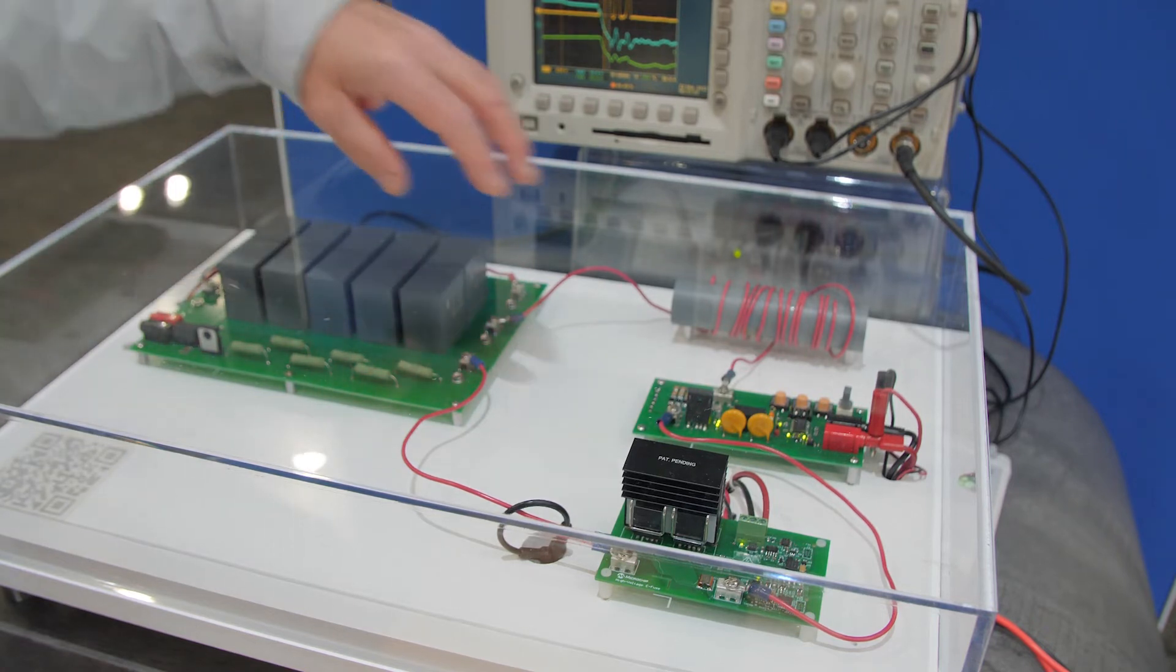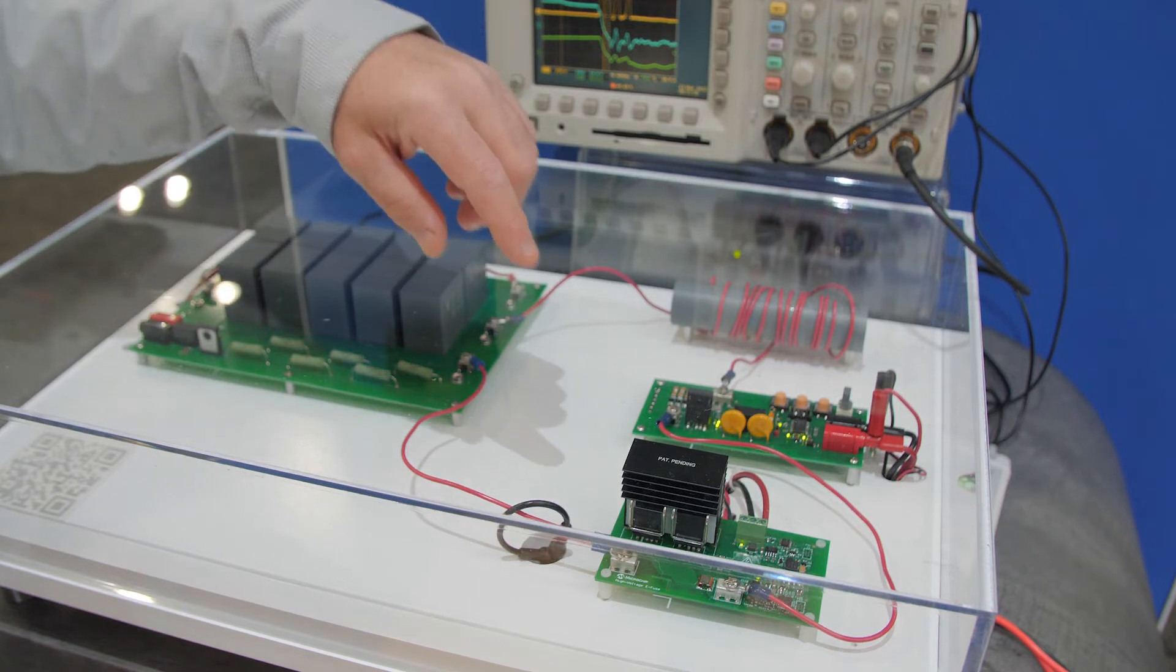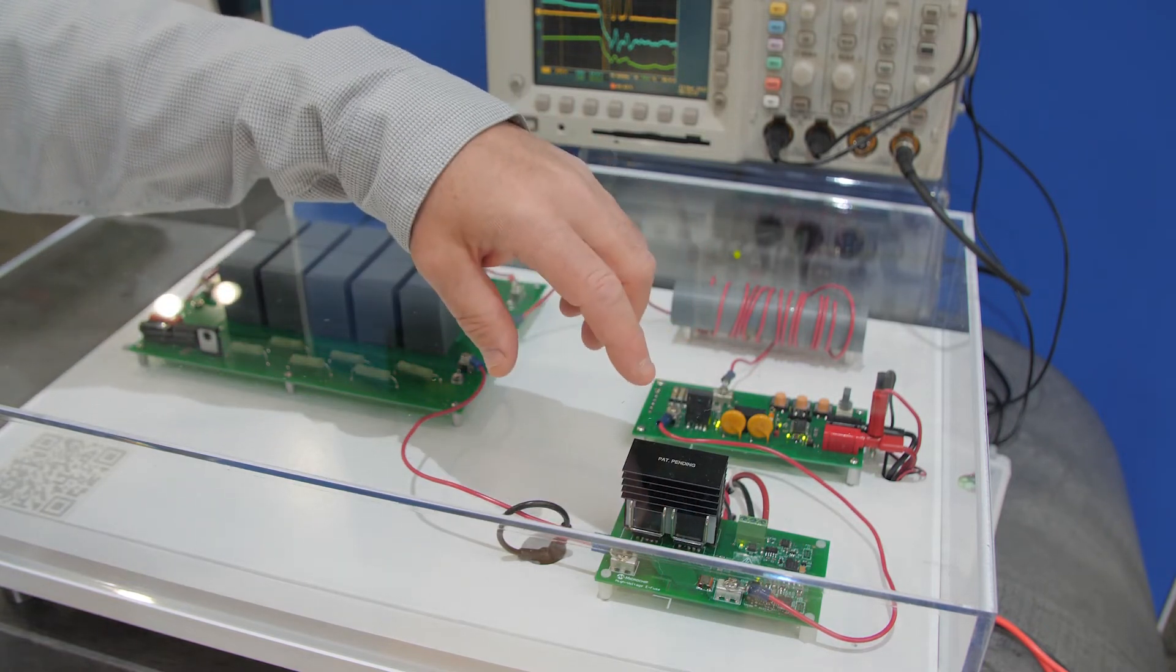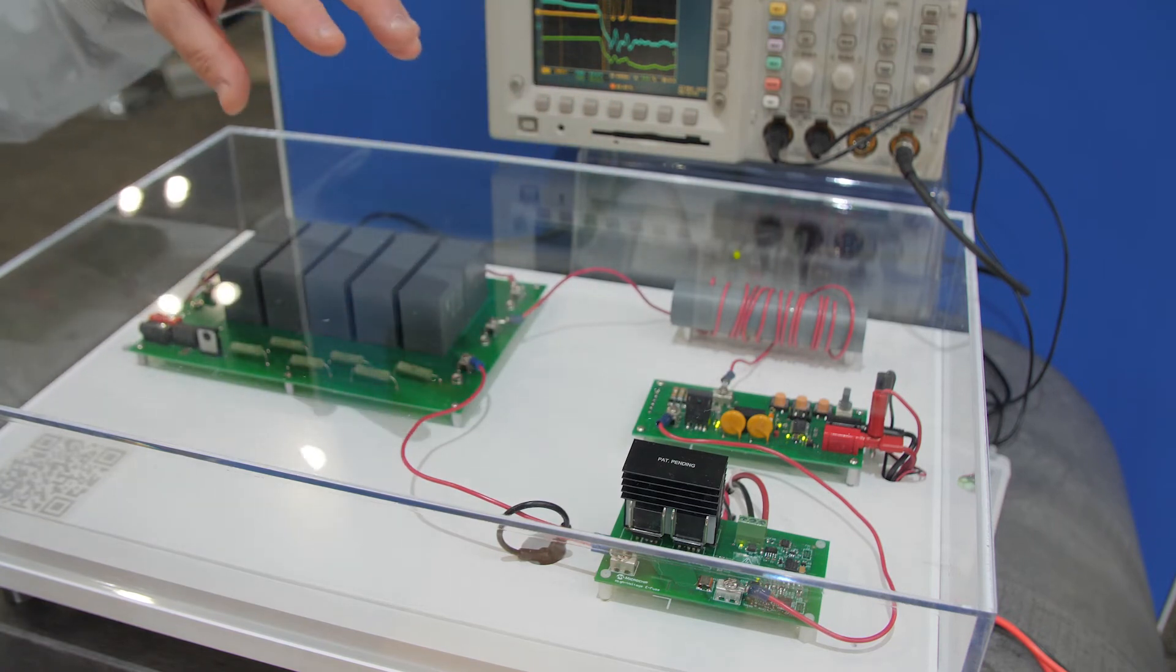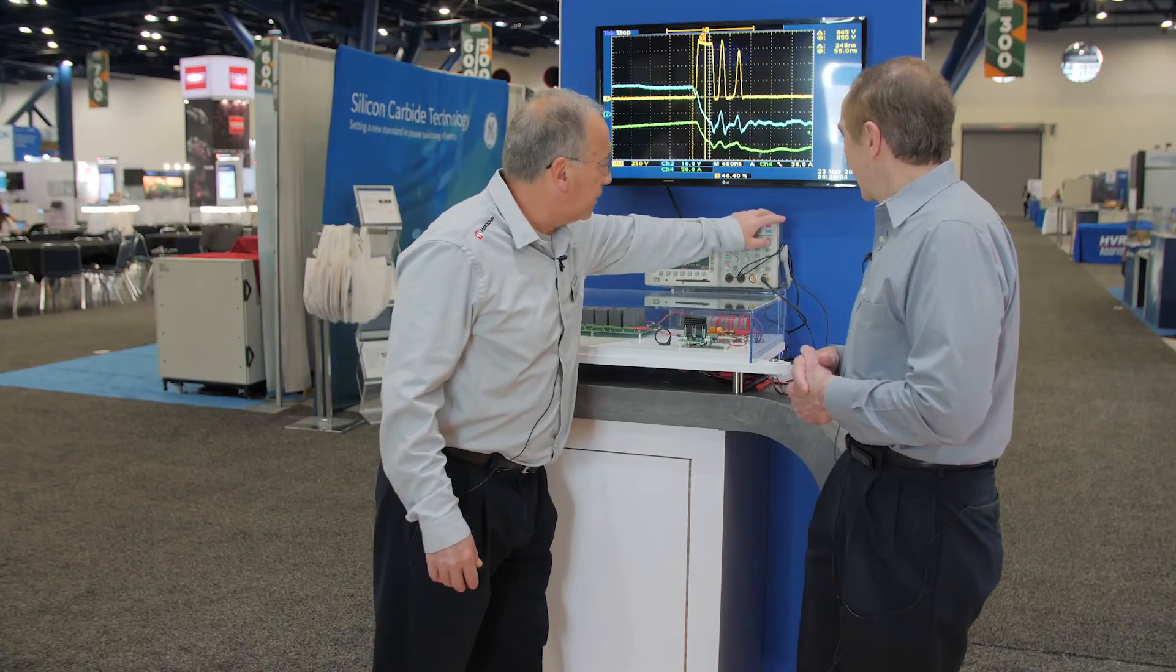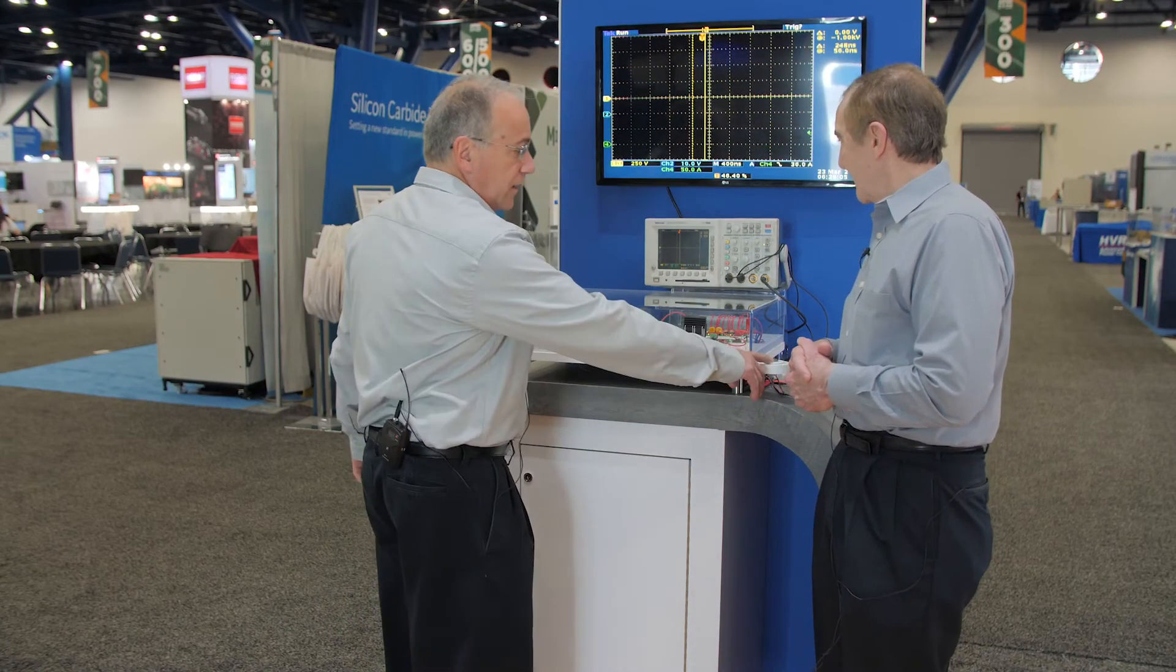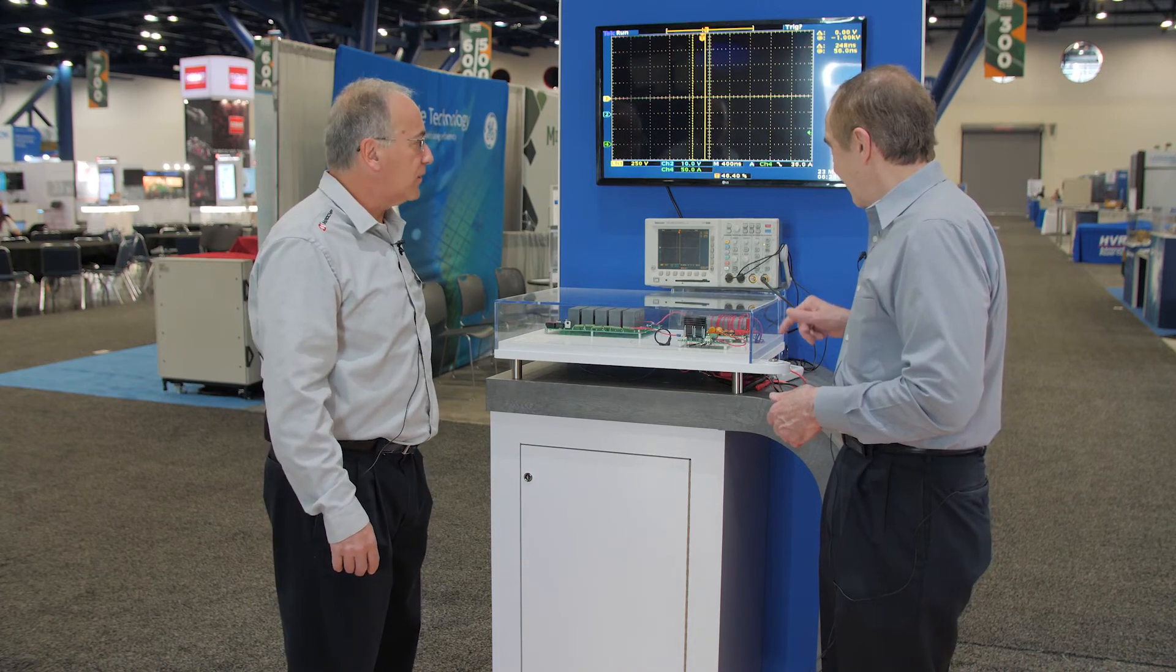When you reach a certain current, after the short circuit board is turned on, it will cause the MOSFETs to turn off and it breaks the circuit. The advantage of using silicon carbide is that it operates much, much faster than a mechanical circuit breaker, and that limits the amount of peak current in the system. So what we can do is, if you'd like, push that button and in about a second or so that will activate the circuit.